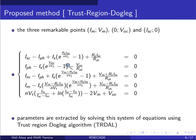Based on the three remarkable points, one can generate this nonlinear system as a function of the five electrical parameters. The system is solved using the Trust Region Dogleg algorithm.